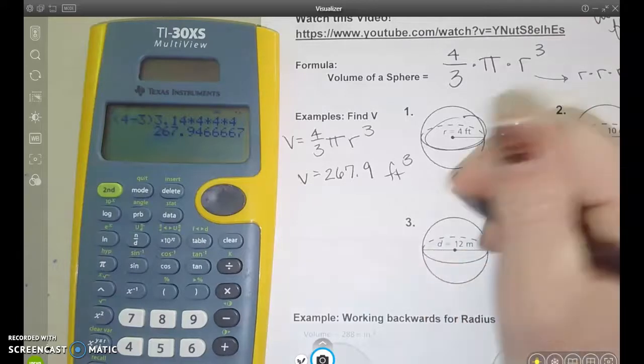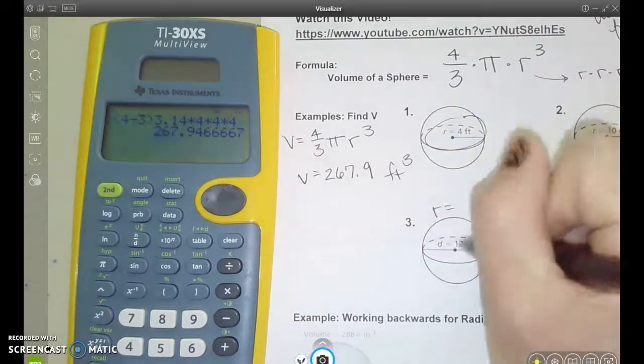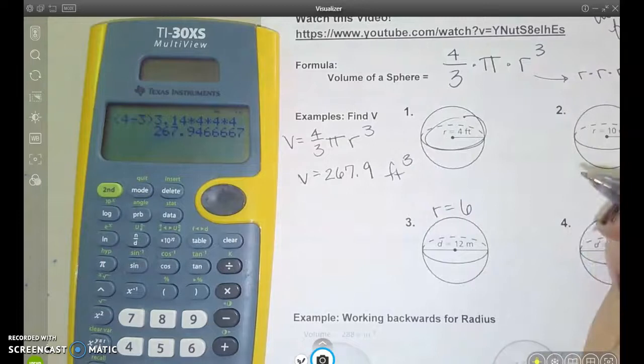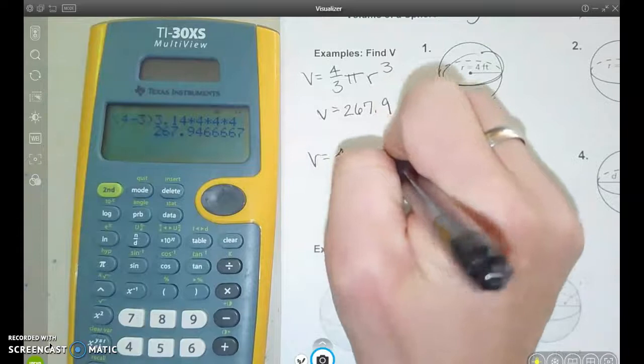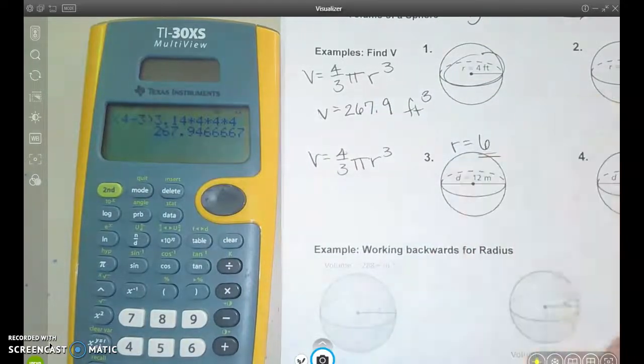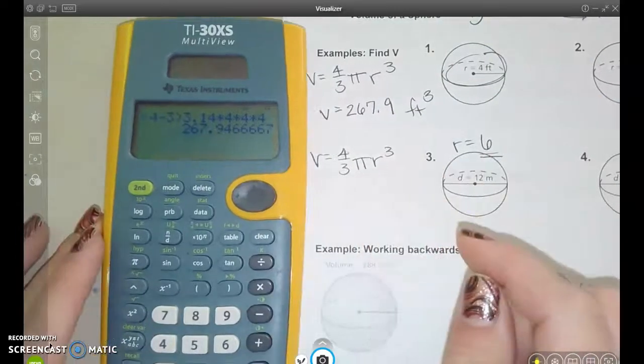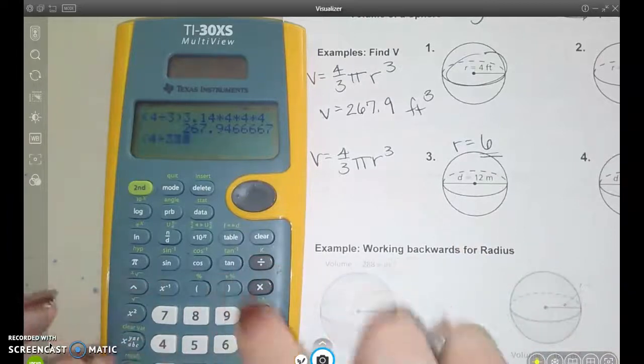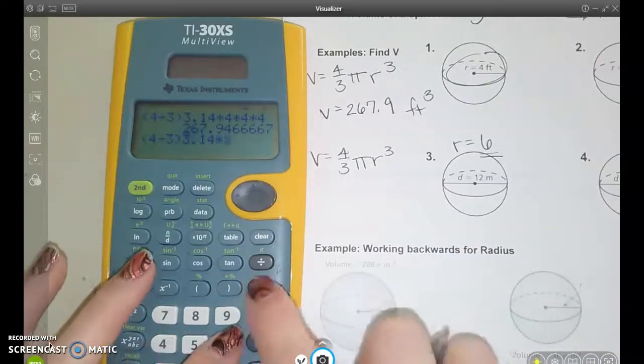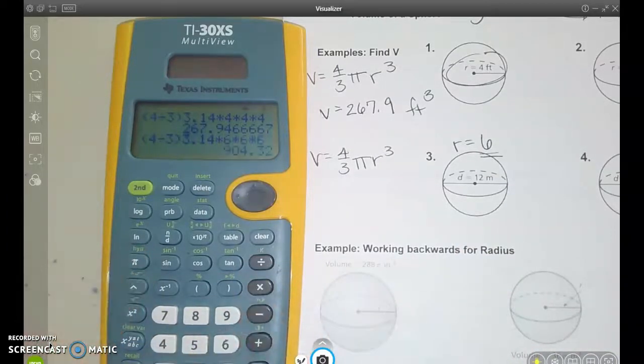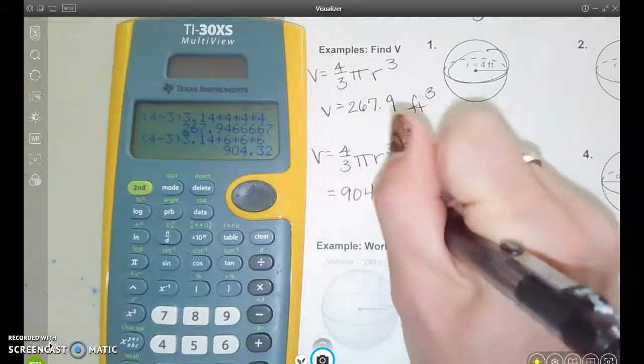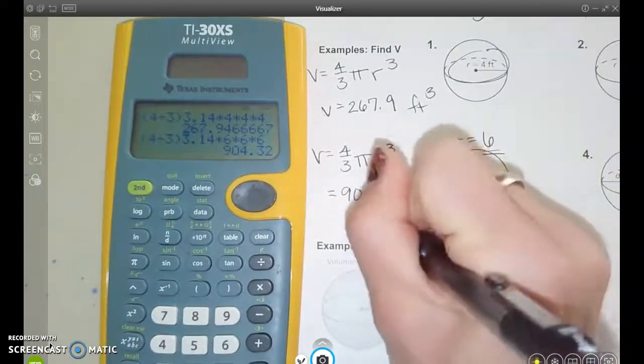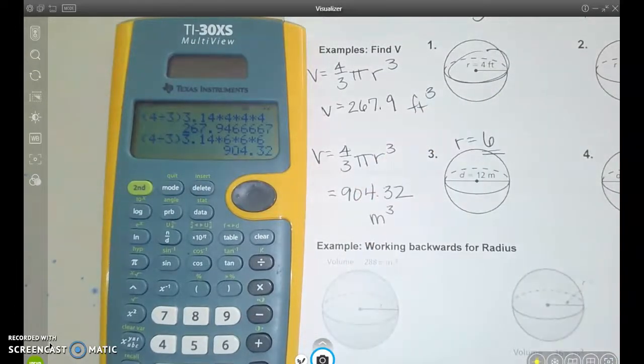If the diameter is 12, we know we need to cut that in half to get the radius. So I'm going to write my formula down again. Four-thirds pi r cubed, and I know I'm going to be typing in six for the radius. So let's do four-thirds, 3.14 times six times six times six. And I get that the volume is 904.32 cubic meters.